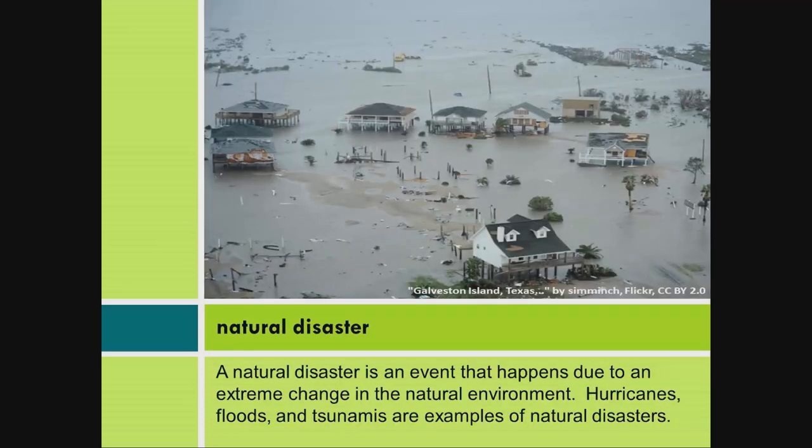Natural disaster: A natural disaster is an event that happens due to an extreme change in the natural environment. Hurricanes, floods, and tsunamis are examples of natural disasters.